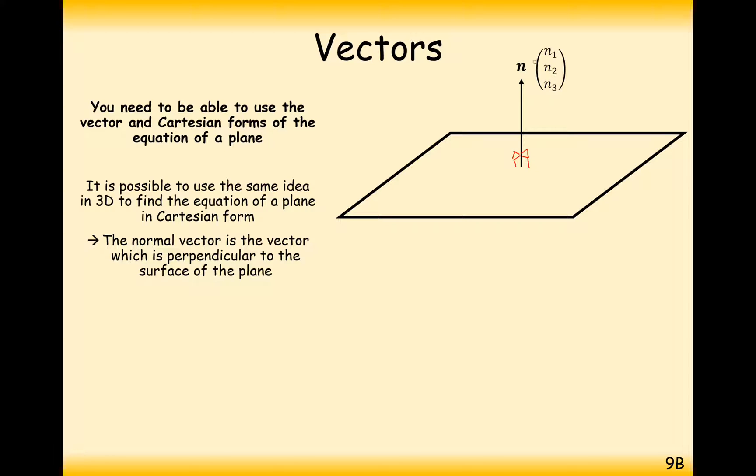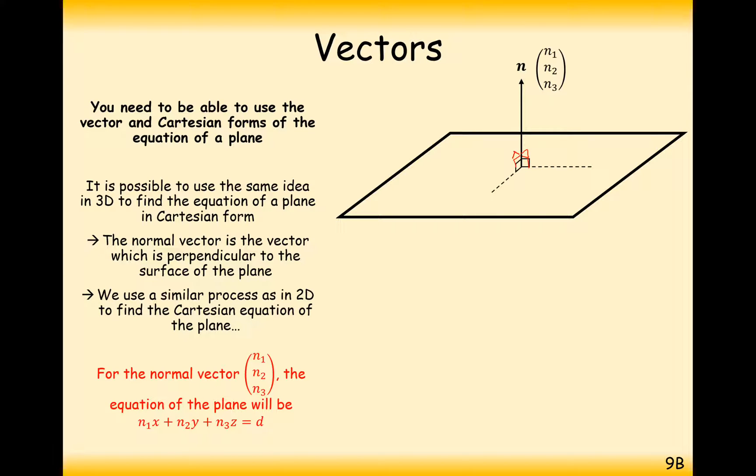Now, generally, we're going to call this vector an n vector, the normal vector. Normal is another word that we can use for a right-angled line. And we're going to use n1, n2, and n3 as the three letters that we need for that.